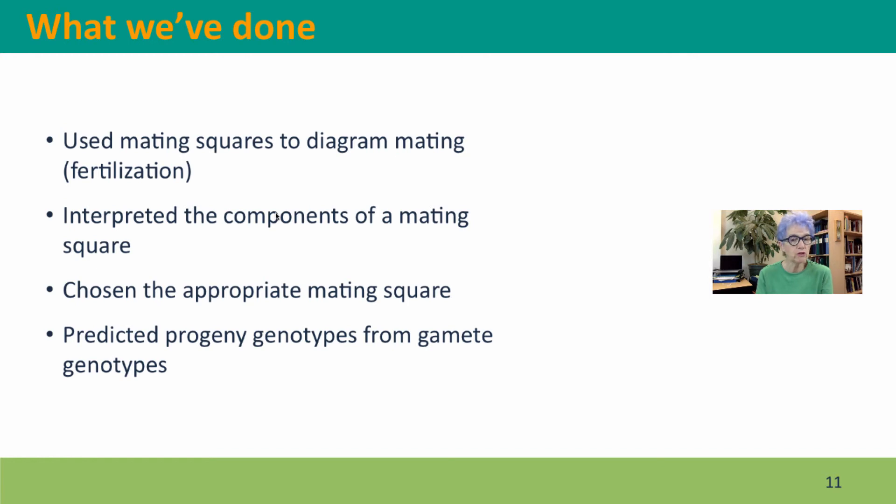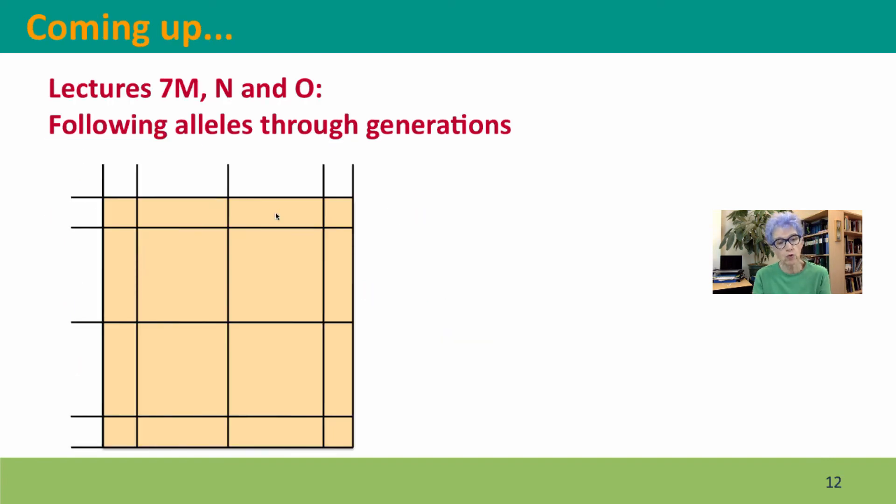So what we've done, we've used mating squares to diagram mating, also called fertilization. And I pulled the mating square apart and put it in the larger context of a cross to help you realize that the mating square is only part of the cross. The other part is determining what gametes you're going to get from the parents. Then the mating square tells you what offspring you will get from the gametes. We've worked at choosing the right mating square and at then predicting progeny genotypes from the gamete genotypes. Coming up next, we're going to do three problems where we put together what we've learned about predicting gamete frequencies through meiosis and predicting offspring frequencies in mating to follow alleles through a complete generation. I hope to see you there.